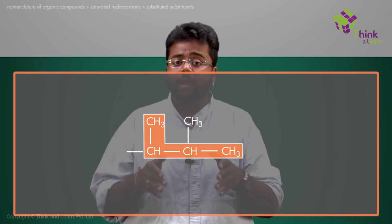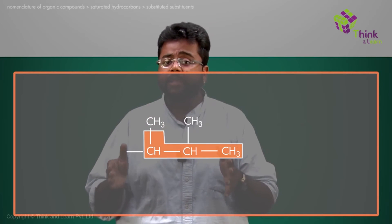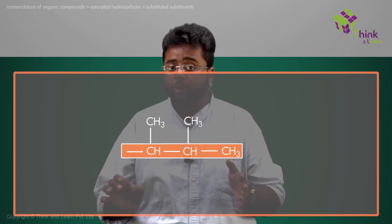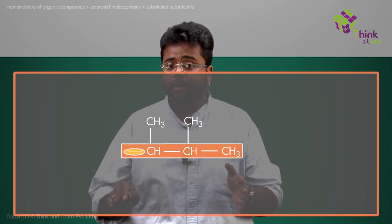So my parent chain over here can only be having these three carbons because that point at which the two are connected is over here. So that means three carbons is my parent chain.